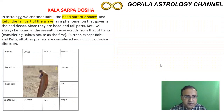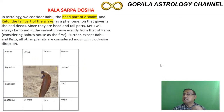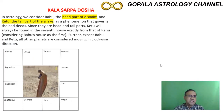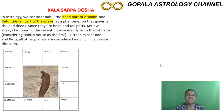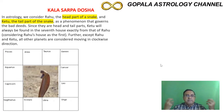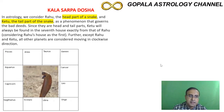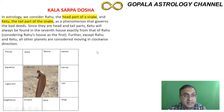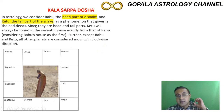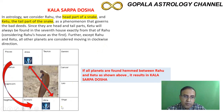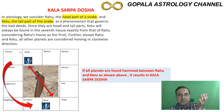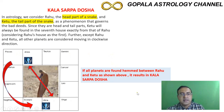Kala Sarpa Dosha is quite different from Sarpa Dosha. 'Kala' means time duration — it is there for a specified period of time, and if we do a remedy, we can reduce its effects. In the soul's journey, this is about paying for bad debts, and Kala Sarpa Dosha is fully enhanced by Rahu and Ketu as karmic planets. Rahu represents the head of the snake and Ketu the tail, and whenever all the planets are engulfed on one side of the Rahu-Ketu axis, it forms Kala Sarpa Dosha.